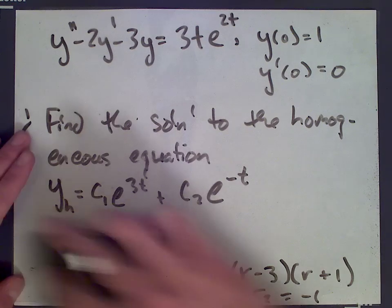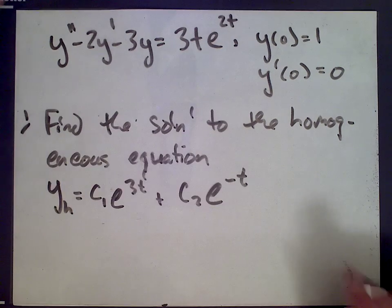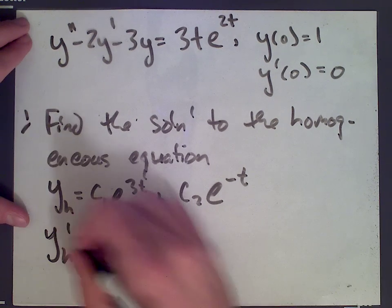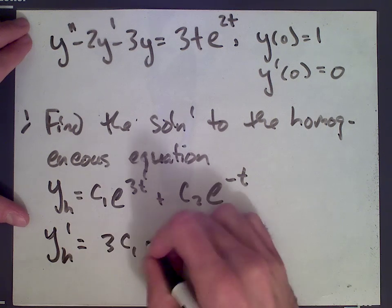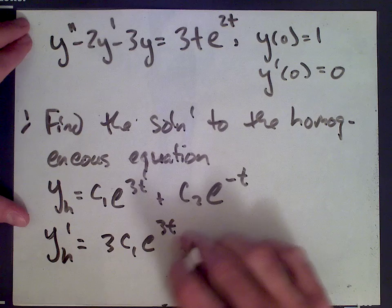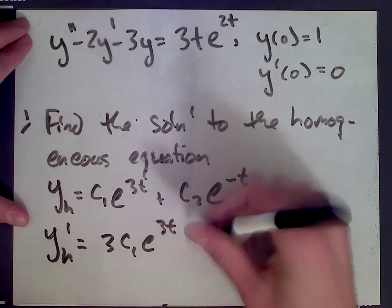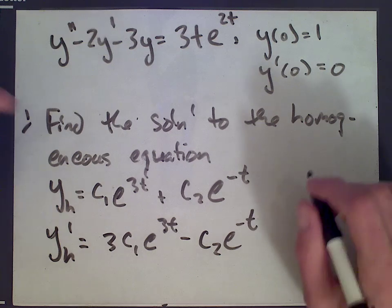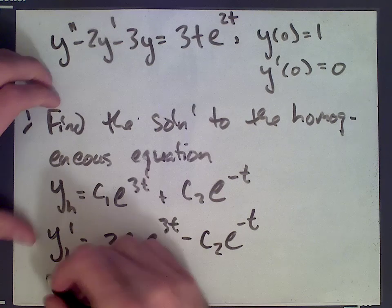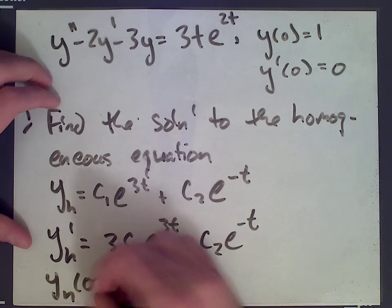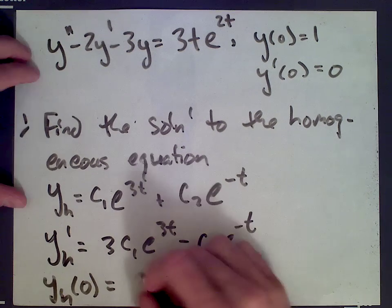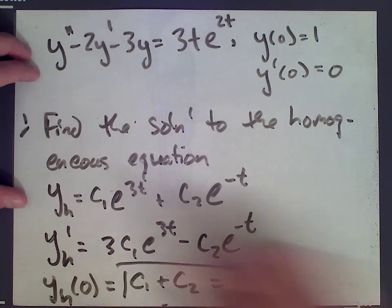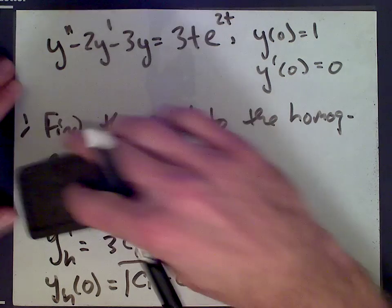Now we're going to solve for c1 and c2 by plugging in the initial conditions. Let's first find the derivative: it is 3c1 e to the 3t minus c2 e to the negative t. Now we plug t equals 0 into yh, which gives c1 plus c2, and we're told that equals 1. So that gives us one equation.